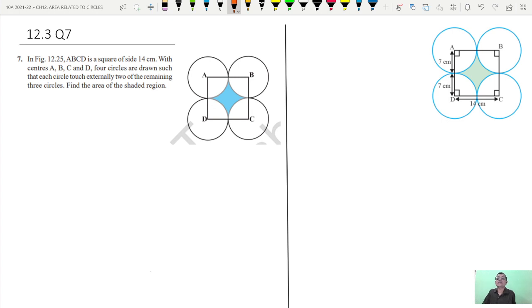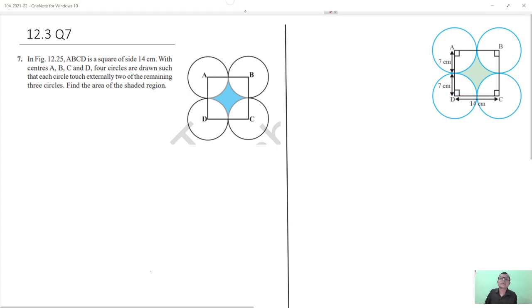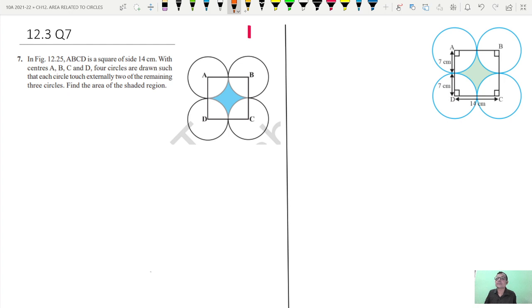Now you see, this side is, side of the square is 14 centimeter. So what is the radius of the circle? This radius, that is half of the square, is 7. Half of this is 7.